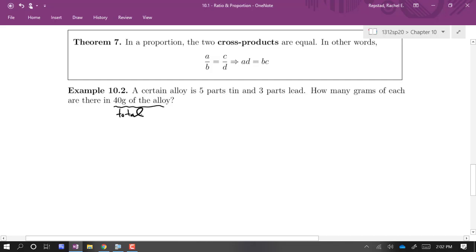So what I think I'll do is make ratios of the amount of tin compared to the total amount in the alloy. So we want to know how many grams of each are there in 40 grams of the alloy. So as a total, I've got 40 grams. Let's say X grams of those are tin.